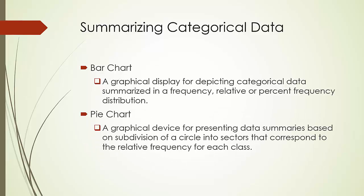A bar chart is a graphical display for depicting categorical data summarized in the frequency, relative, or percent frequency distribution. A pie chart is a graphical device for presenting data summaries based on subdivision of a circle into sectors that correspond to the relative frequency for each class. I want to emphasize that a bar chart is used for summarizing categorical data. Later on, we will introduce histogram, which is very similar to a bar chart but used for summarizing quantitative data.